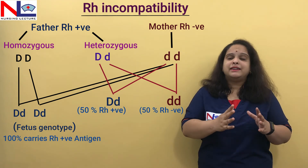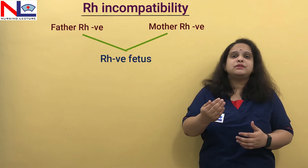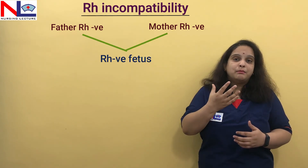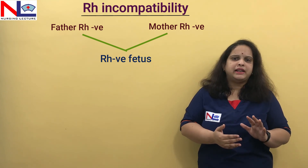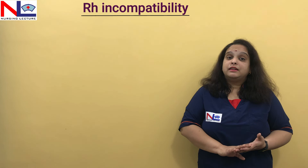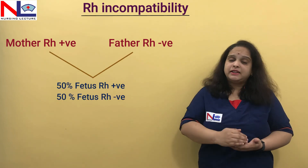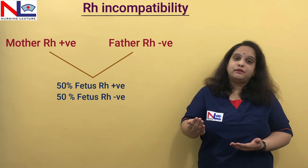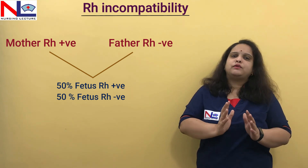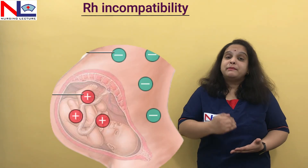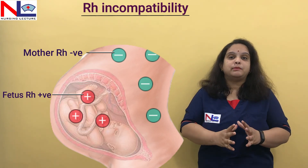If both parents are RH negative, nothing will happen — everything will be fine, because no such antigen enters the mother's body. The fetus will also be 100% negative, and no incompatibility will arise. Similarly, if the mother is positive and the father is negative, the fetus may be positive or negative, but since the mother is already positive, no incompatibility arises and no effect on the fetus occurs. The problem arises only when the mother is negative and the fetus she carries is positive.